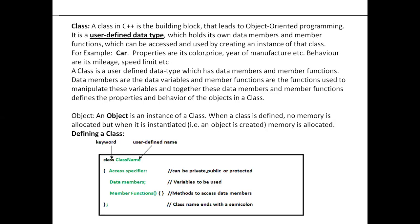Such a class we are going to define in our user defined data types. When you define a class, no memory is reserved for that class. A class without an object is meaningless. Don't get confused about what an object is — just recall how you declare a variable in C language. For example, to declare an integer variable: int x semicolon. This x is a variable of type integer.